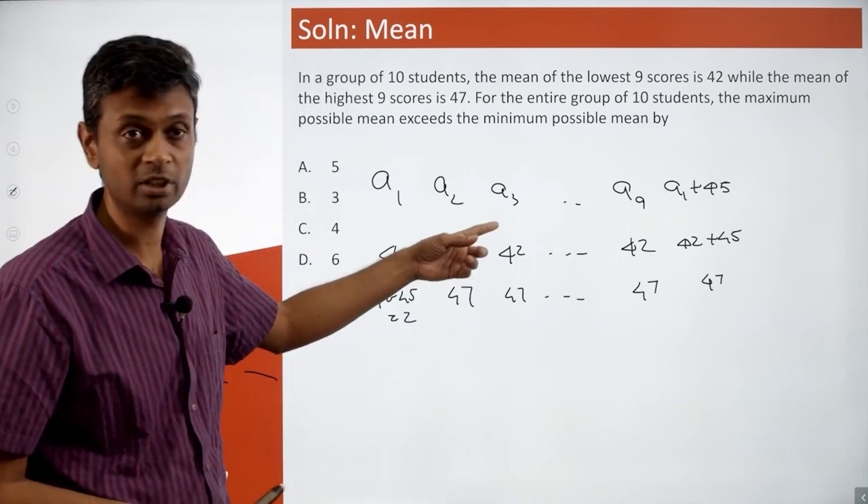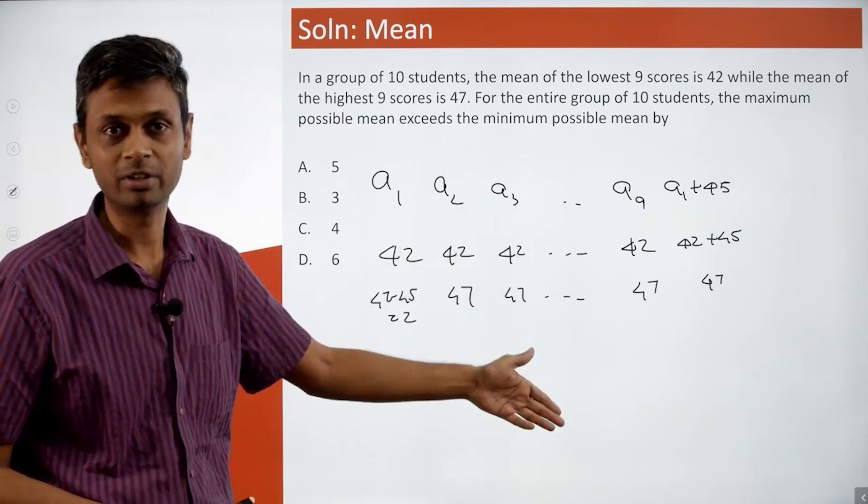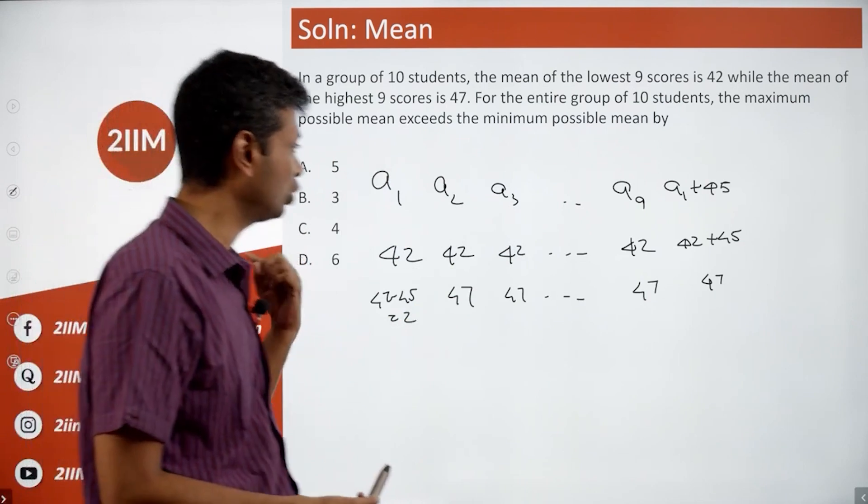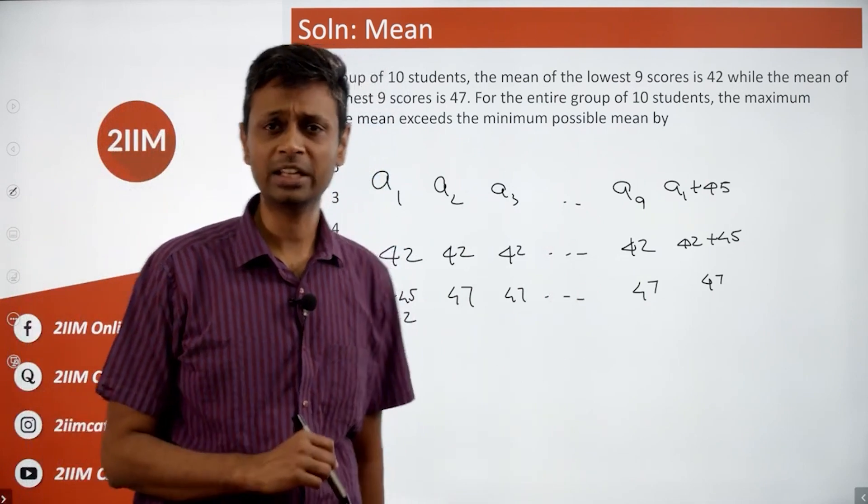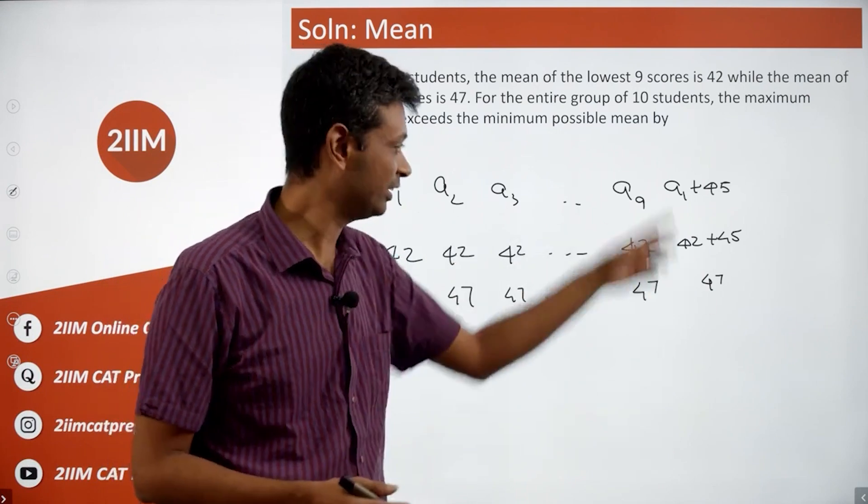This represents one boundary, this represents another boundary. Find the difference in the means—that's the answer. One extreme is when a1 through a9 are all equal. Another extreme is when a2 to a10 are all equal.